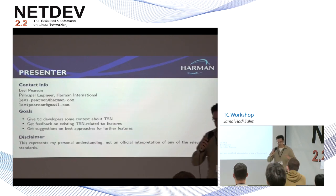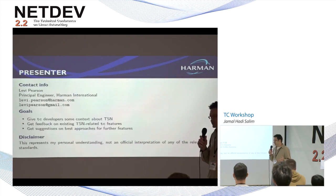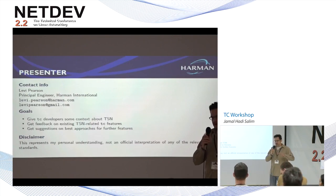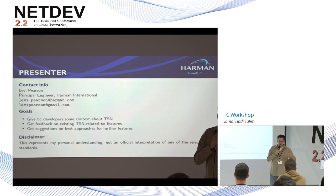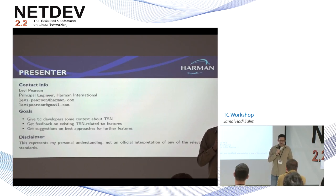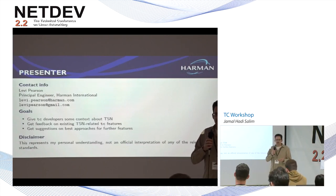My goal here is to give everybody a little background about what time-sensitive networking is, and to get some feedback on existing TSN-related TC features, and suggestions on the best approaches for further features. There has been discussion on the NetDev mailing list about how to get some of these features into the kernel. There are a lot of out-of-tree drivers to support time-sensitive networking features, and there's a move to get that support into the kernel in a way that makes everybody happy.